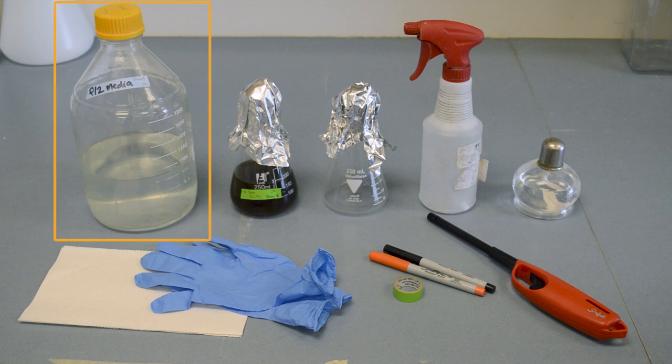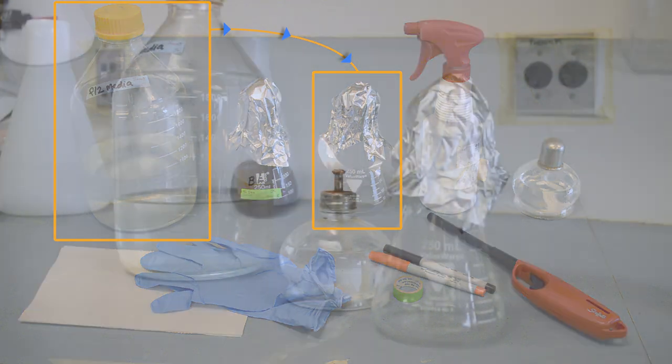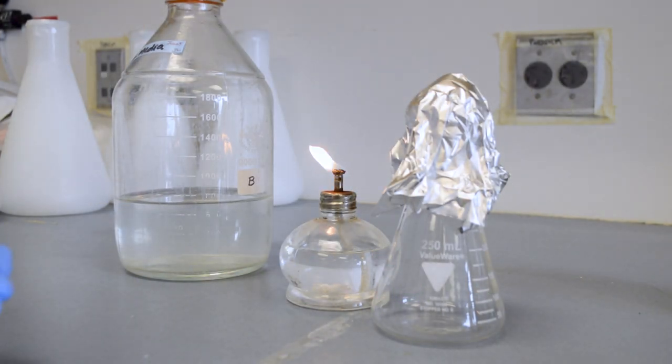Next we're going to add sterile media to our new flask. We're using F2 here. If you have sterilized your media inside your new flask, you have already done this step. Start by loosening the cap on your media bottle.